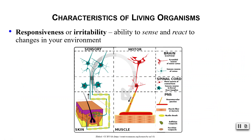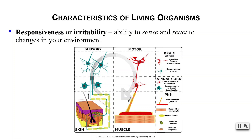Living things are capable of sensing and reacting to their environment — this is known as being responsive or irritable. For example, if we touch a hot stove, sensory receptors in our fingers send pain signals from our skin to our brain. Our brain quickly processes that information and sends signals through motor neurons to the skeletal muscles in our fingers and hand, and we quickly jerk our hand away. It's equally important that we can both sense and react to changes in our environment, as failure to do either would lead to excessive damage to our skin and tissues.